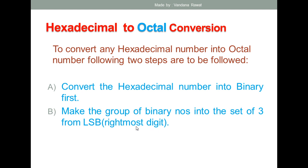An important point to note is that you start making the groups from the LSB — that is, the right-most digit. If the MSB part does not have a complete group of three binary numbers, you can add zeros to the MSB side to complete the set of three.